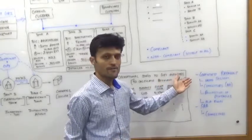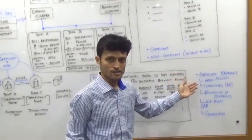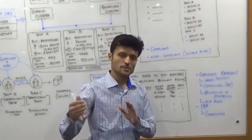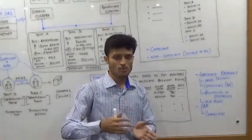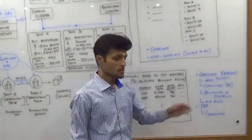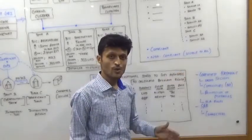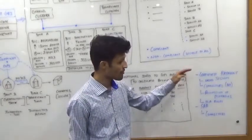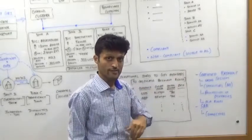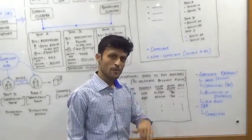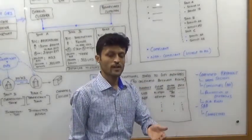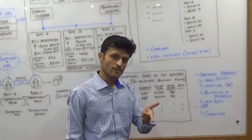First, we will have a certified payment system. Each bank is using some vendor-specific payment system, or probably a payment system provided by SWIFT. This particular payment system has to have a couple of changes or probably should be certified by the SWIFT GPI.